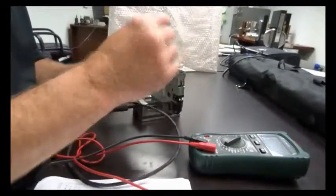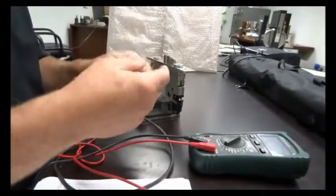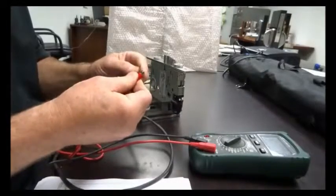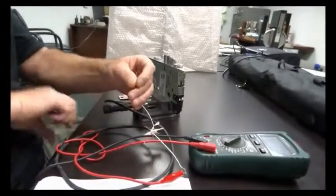The wires for that door position switch, which are normally the longer white wires, but you can figure that out. So we connect these. Polarity doesn't matter. We connect these to the multimeter.